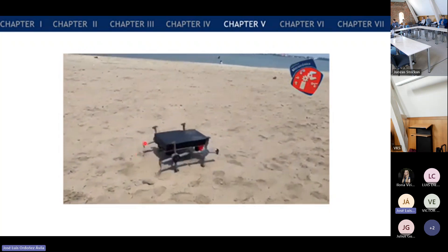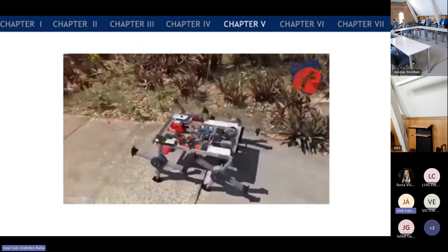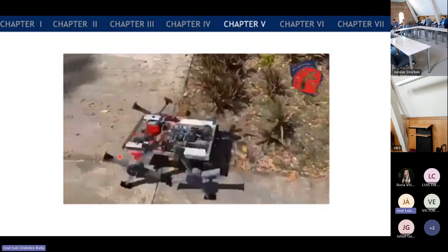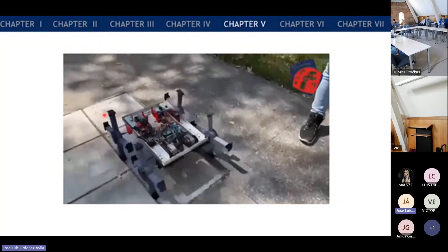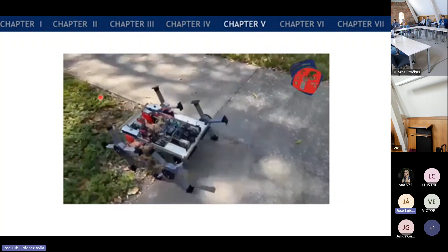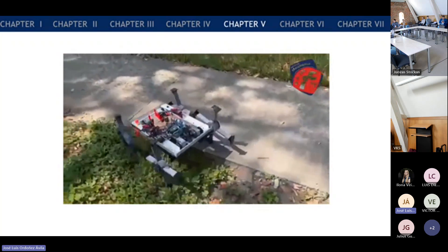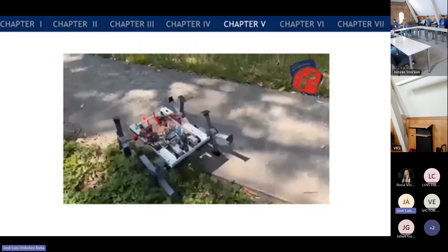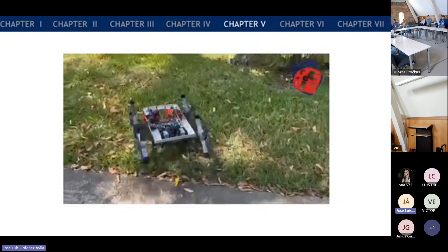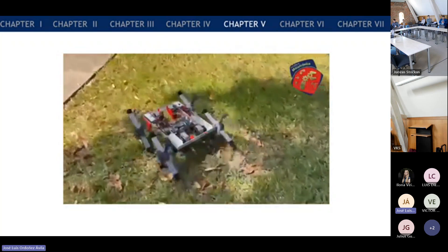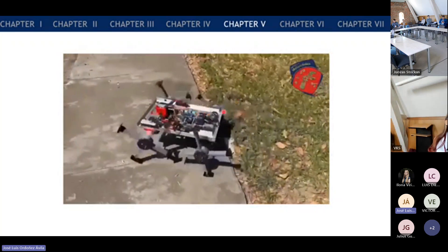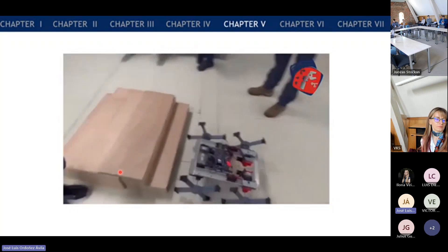This is the final prototype. We also tested in this environment. I think this one is easier because there are no obstacles to pass, but we can also prove that our orientation system was working correctly. It moves with no problem in grass also, and the obstacles here were more small. And we also proved it in some stairs.